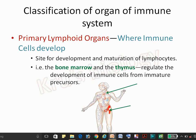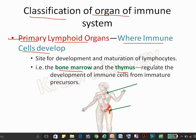The classification of the organs of the immune system: the first one is the primary lymphoid organ and the second one is the secondary lymphoid organs. The primary lymphoid organs are where the immune cells are developed. The examples of primary lymphoid organs are bone marrow and thymus.